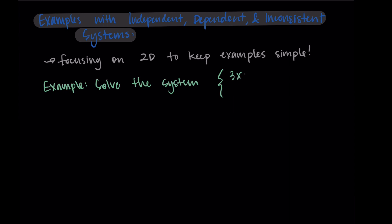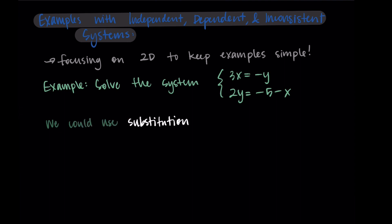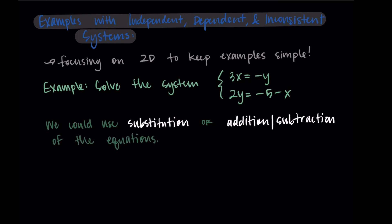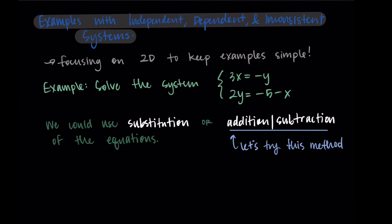For our first example, let's solve the system 3x equals negative y and 2y equals negative 5 minus x. This is a fairly straightforward example where we could use substitution, but I want to go over the addition or subtraction method. The idea is to take one equation and add or subtract it from the other. I'll show you this method because it motivates what we do when we start talking about matrices in linear algebra.